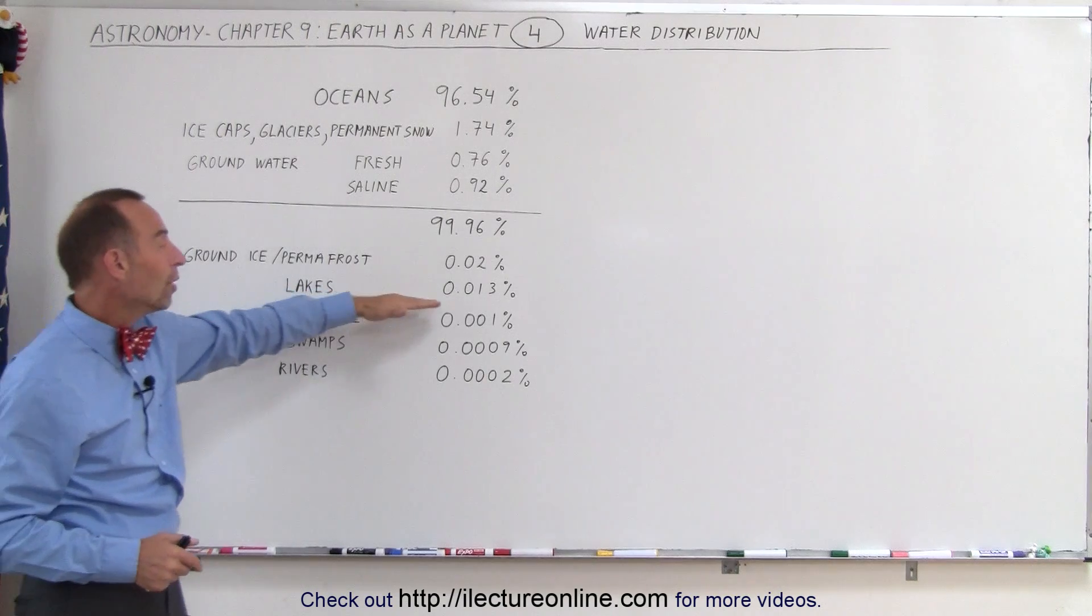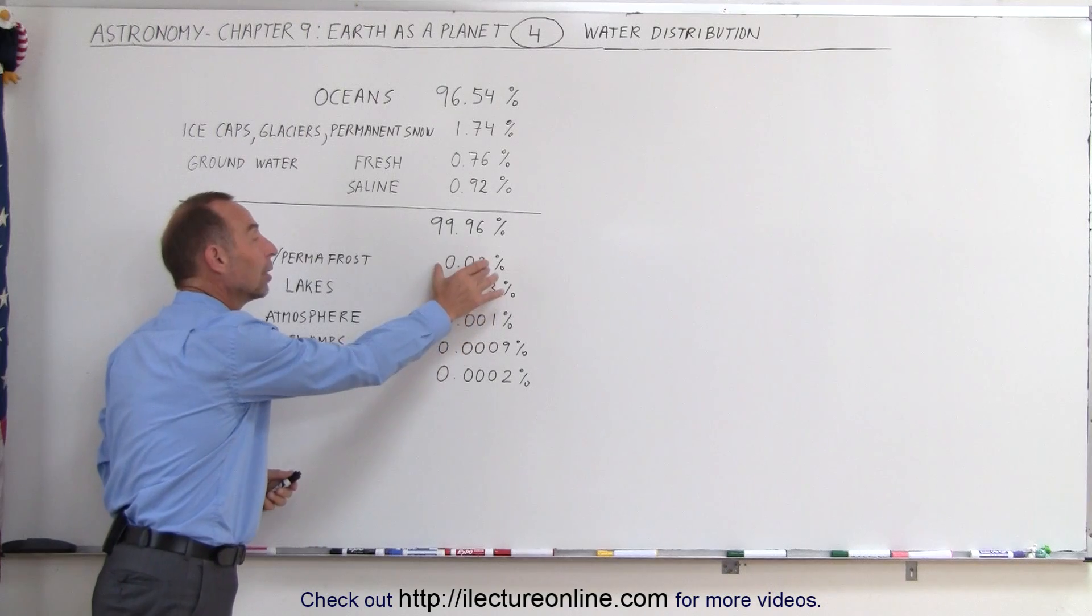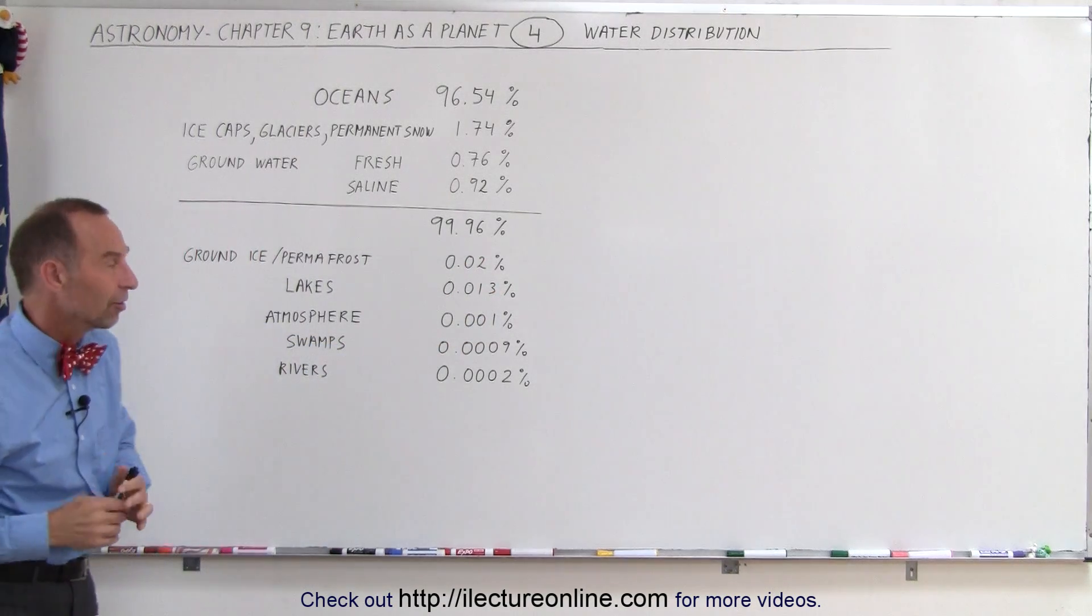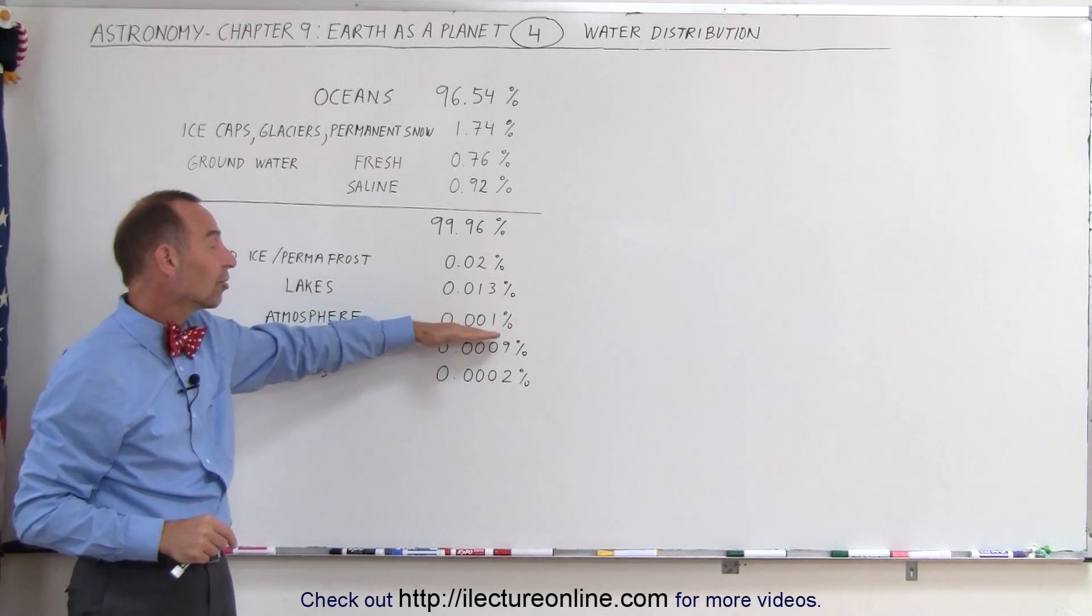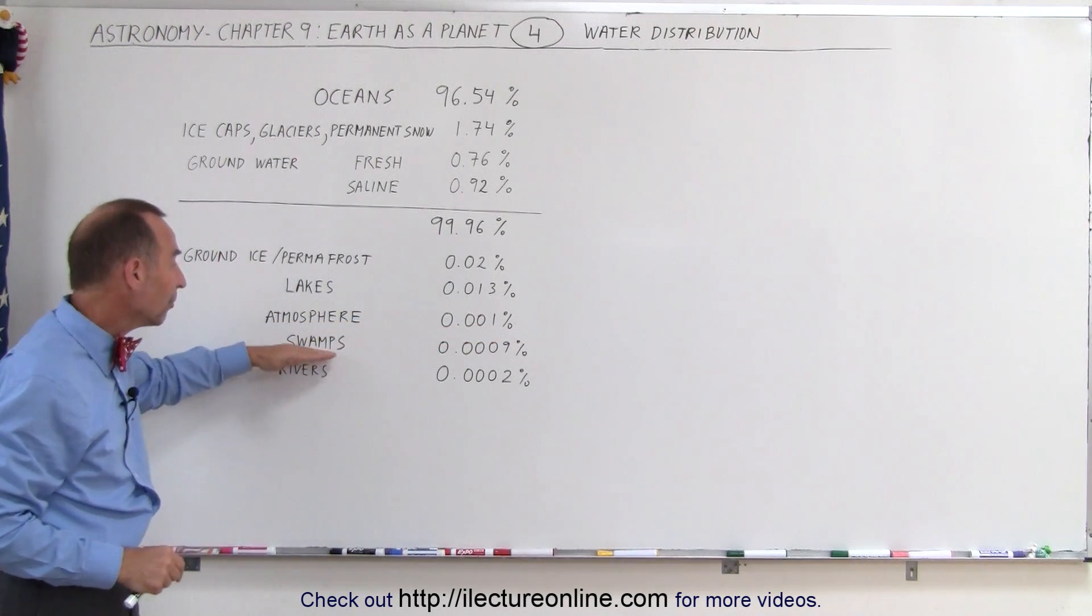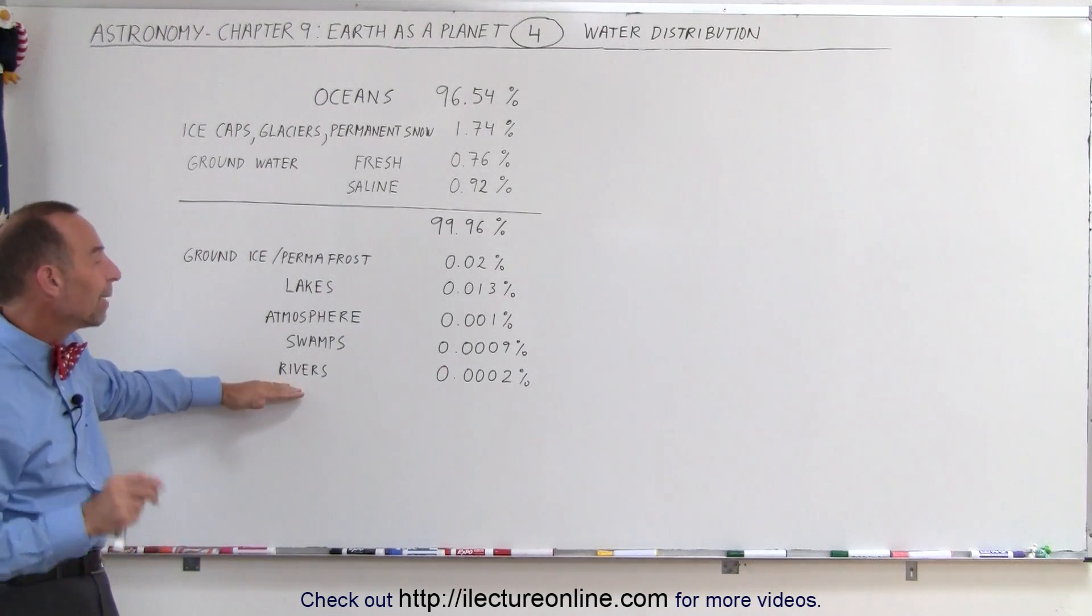Lakes contain 0.013%, which is interesting that all the lakes combined have less water than the water contained within the permafrost. On top of that, the atmosphere contains another 0.001%, swamps 0.009%, and finally all the rivers of the world combined only contain 0.0002% of all the water on the earth.